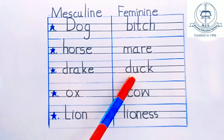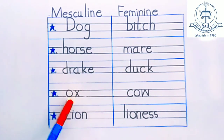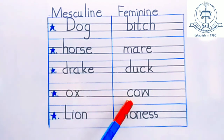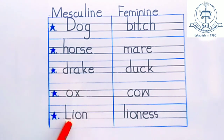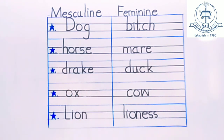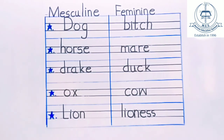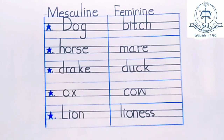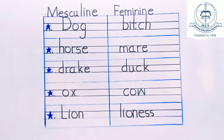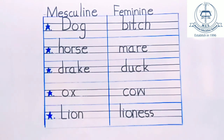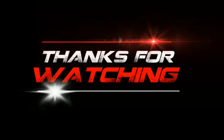Lioness. Okay children, now read with me — masculine, feminine. Dog, bitch. Horse, mare. Drake, duck. Ox, cow. Lion, lioness.